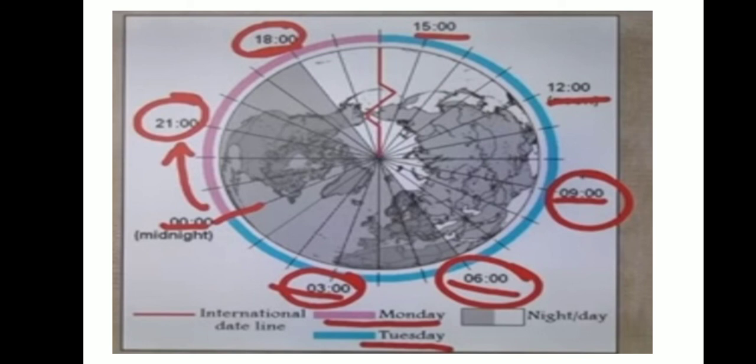To make things easier, the 180 degree meridian was chosen as the point from where each day is set to actually start on the earth. It is also the place where one calendar day changes to the next.